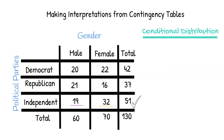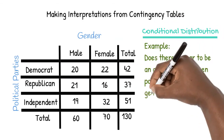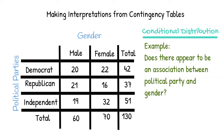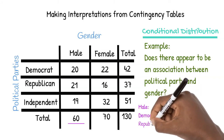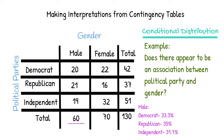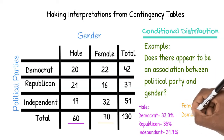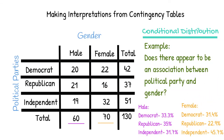Let's see another example. Does there appear to be an association between political party and gender? We can take a look at the conditional distribution for each gender. Since there are 60 males, we put each value in the first column over 60 and multiply by 100 to convert to a percent. Since there are 70 females, we put each value in the second column over 70 and multiply by 100. We get the conditional distributions 31.4%, 22.9%, and 45.7%. Notice that 35% of males are Republican, while 22.9% of females are Republican.